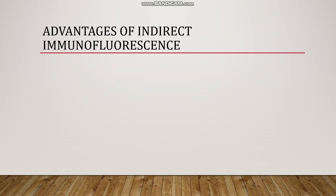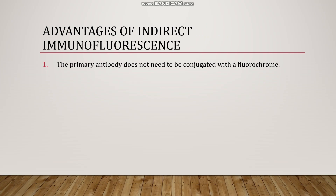The advantages of indirect immunofluorescence over direct immunofluorescence: the primary antibody does not need to be conjugated with a fluorochrome, which is important because the supply of primary antibody is often a limiting factor. The indirect method avoids the loss of antibody that usually occurs during the conjugation reaction. Indirect methods also increase the sensitivity of staining because multiple molecules of the fluorochrome reagent bind to each primary antibody molecule, increasing the amount of light emitted at the location of each primary antibody.